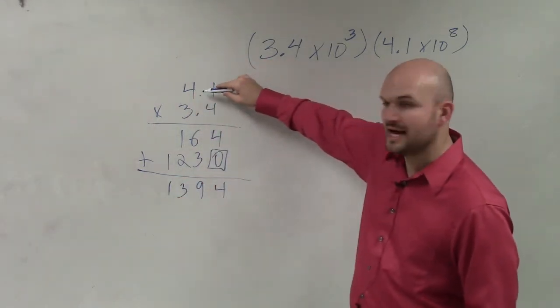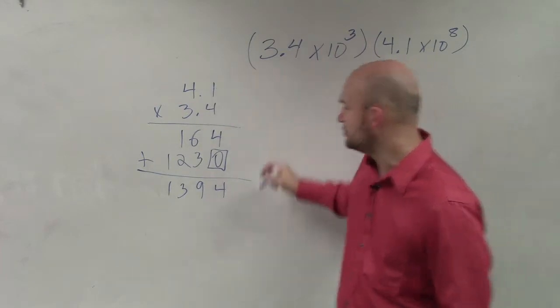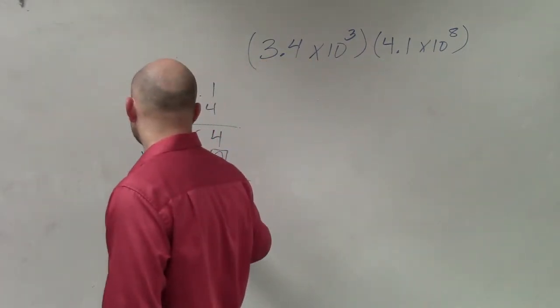Then I count the spaces that are to the right of the exponent, which are 1 or 2. So I start here and move over, so 13.94.